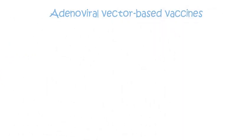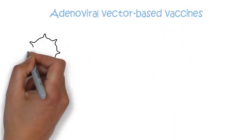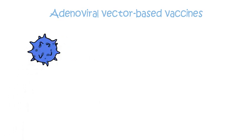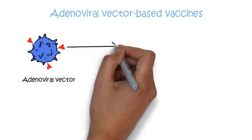The adenoviral vector-based vaccines use an adenovirus strain that is found in chimpanzees. The adenovirus is used as a vehicle to display the spike protein of the COVID-19 virus. In these vaccines also, our immune system is taught to identify the spike protein as foreign.